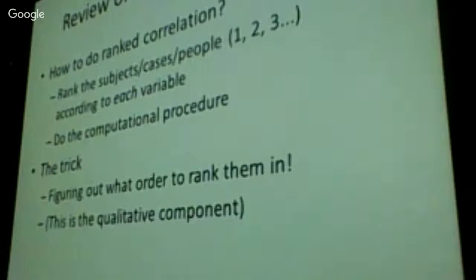So how do you do a ranked correlation? Well, you rank the subjects first. And then you just do the computational procedure, as I taught you. It's essentially doing a Pearson's correlation on the ranks. The trick, though, is to figure out how to rank, the order of the ranking. And this is the human component.